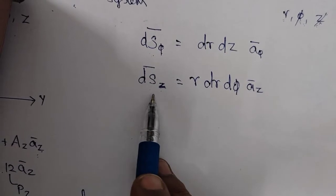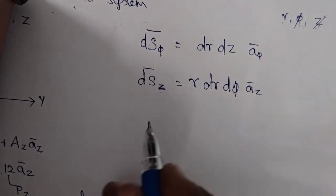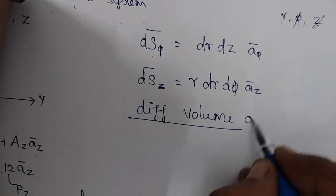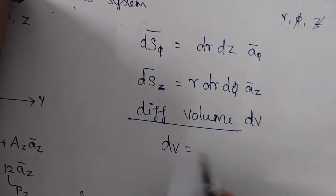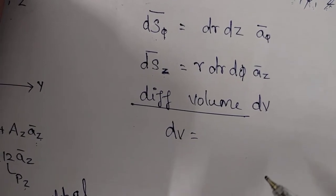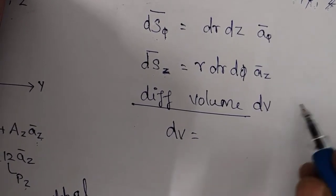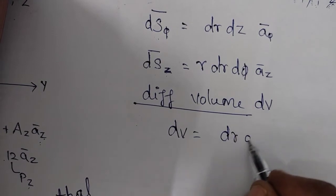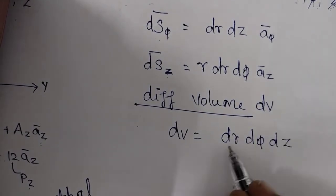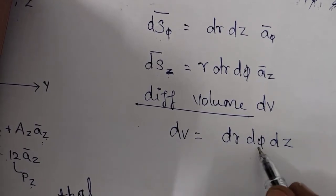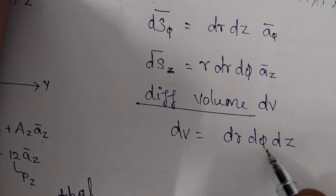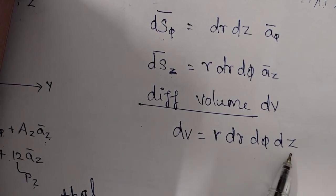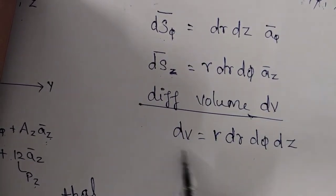The last differential element is differential volume. Volume is a scalar quantity. dV is the multiplication of three variables: dr, dφ, and dz, because we measure volume in cubic meters. Since dφ is a differential angle and does not come alone, we multiply it with r to convert it to differential length. So dV = r·dr·dφ·dz. This is the differential volume in cylindrical coordinate system.